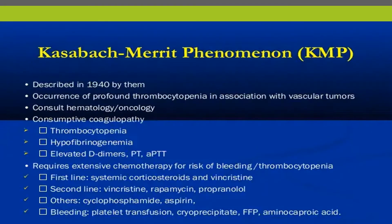The most common differential diagnosis for hemangioma is Kasabach-Merritt phenomenon, described in 1914, which is the occurrence of profound thrombocytopenia in association with vascular tumors. It is characterized by consumptive coagulopathy — thrombocytopenia, hypofibrinogenemia, elevated D-dimers, and PT and PTT elevation. It requires extensive treatment for erosive bleeding and thrombocytopenia, including corticosteroids, vincristine, and supportive management such as platelet transfusion, cryoprecipitate, and FFP transfusion.